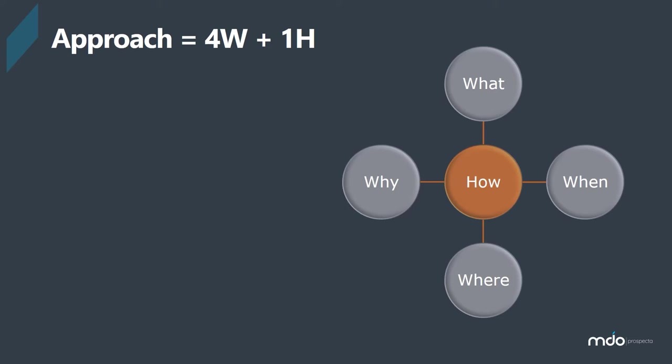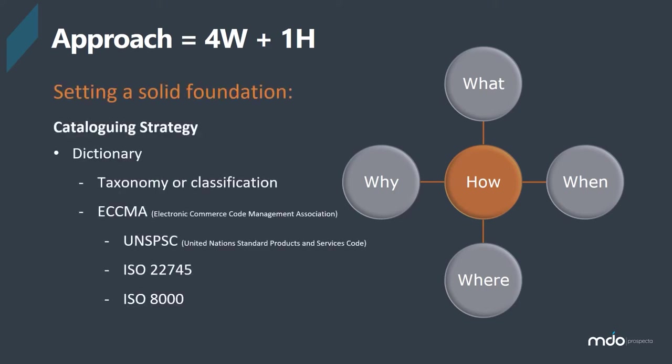That is significant working capital and cash tied up. In today's world with COVID, the pandemic, and global economic concerns, this is going to be a growing priority — how do you cut cost and put cash into the business? So that leads us to number one: you need to create a dictionary and have a cataloging strategy. We're going to talk about that through these four W's, and then at the end, the how.